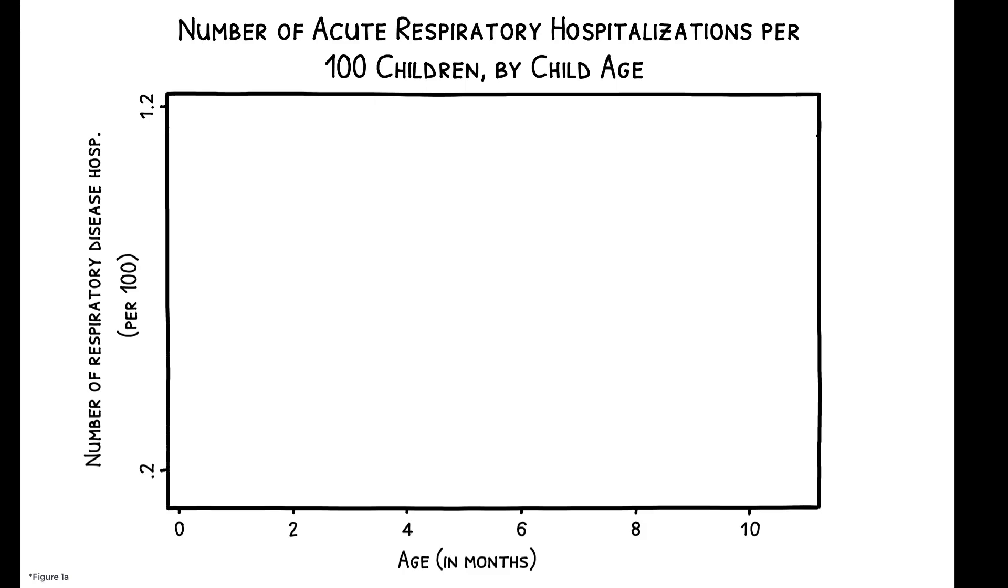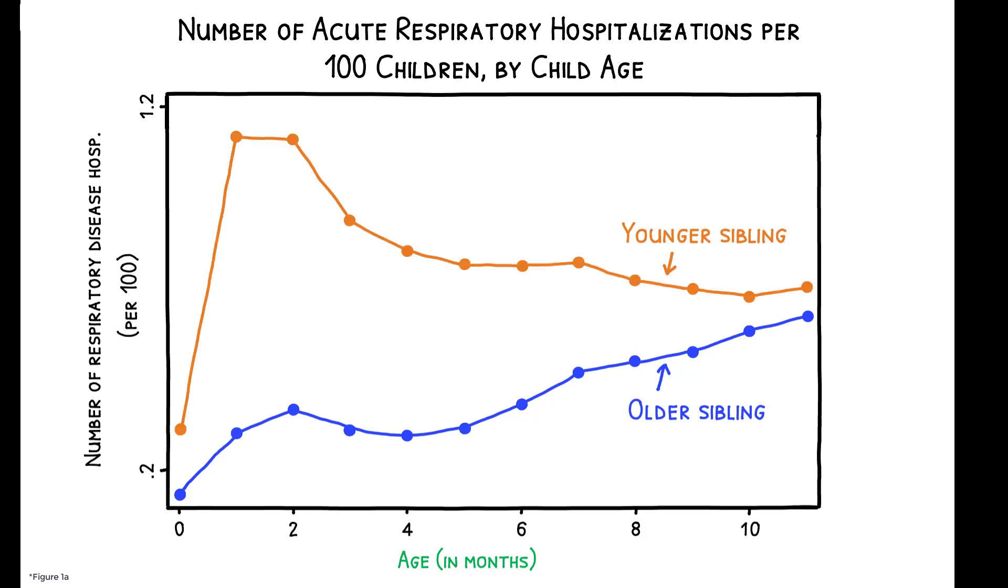To start, this figure plots the average number of acute respiratory disease hospitalizations by child age during the first year of life. Relative to first-born children, younger siblings have 2 to 3 times higher hospitalization rates, and the difference is especially large when children are 1 and 2 months of age.